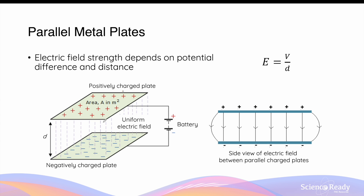The density of field lines is constant between the plates, meaning electric field strength is also constant. The most common way to create a pair of charged parallel plates is by connecting them to a battery, which produces a potential difference. One plate connected to the positive terminal becomes positively charged, while the plate connected to the negative terminal becomes negatively charged. The difference in charge is described as the potential difference.